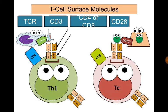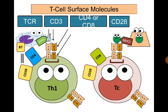Another important molecule on the surface of T-lymphocytes is the CD28 molecule. After a T-helper cell receptor attaches to an antigen on the surface of an antigen-presenting cell, a second signal is important for activation of the T-helper cell to start cytokine production. This signal is provided by the attachment between CD28 on the surface of the T-helper cell and B7 molecule present on the surface of the antigen-presenting cell.